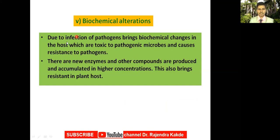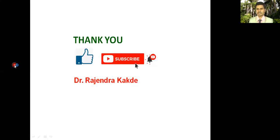Biochemical alterations due to infection: pathogens bring biochemical changes into the host, and as soon as pathogens infect the host, the host itself brings biochemical changes that are toxic to the pathogenic microbes and cause resistance. New enzymes and other compounds are produced and accumulated in higher concentration in the host, which also brings resistance to the plant. Thank you for your attention — please like and subscribe to my YouTube channel Dr. Rajinder Kakade and press the bell icon to get notifications of new videos.